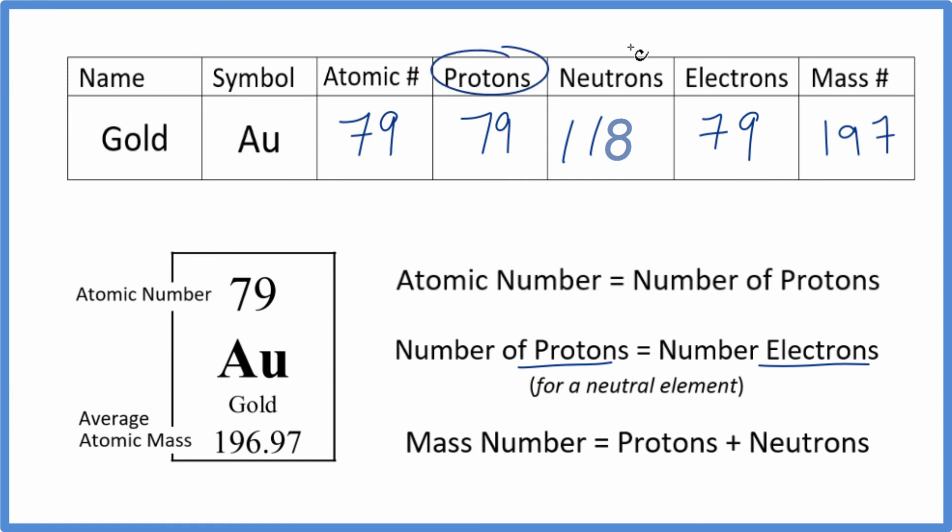We found the protons, neutrons, electrons, and the mass number for Au, gold. This is Dr. B, and thanks for watching.